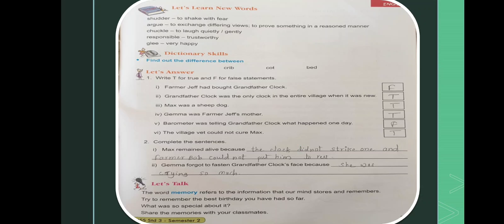Here are the lesson's question answers. So first we have to learn new words. Shudder means to shake with fear. Argue: to exchange different views to prove something in a reasoned manner. Chuckle: to laugh quietly, gently. Responsible: trustworthy. Glee: very happy. Clear? So let's answer here.